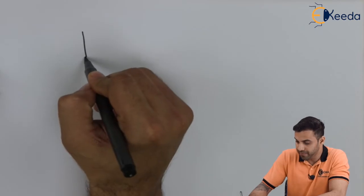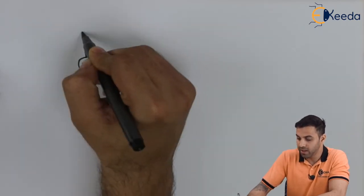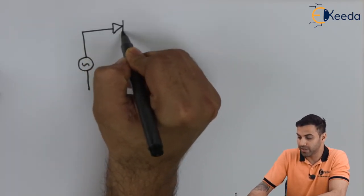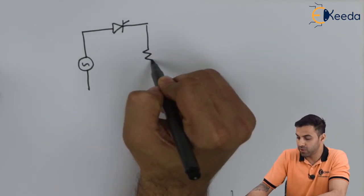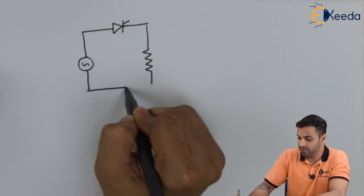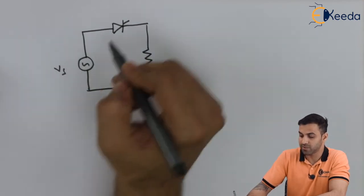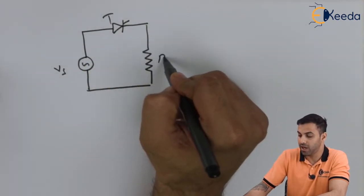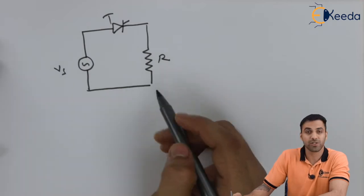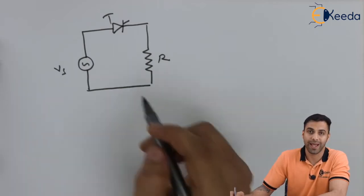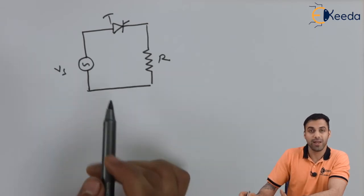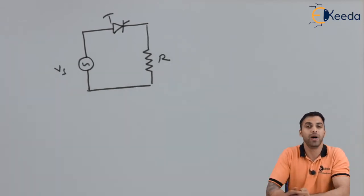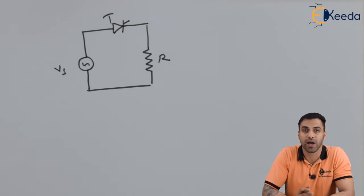Where let's say this is my AC supply, I'm connecting a thyristor to a resistive load. Let's say Vs is my supply, T with a thyristor, R with a resistive load. But this is called half wave AC control method.